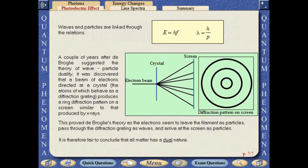Waves and particles are linked through the relations E equals hf and lambda equals h over p.